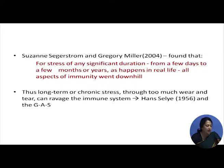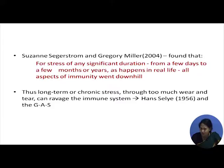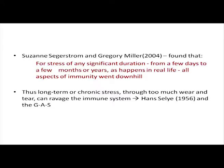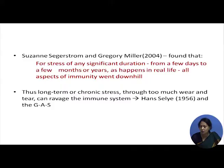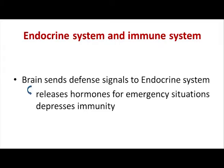Segerstrom and Miller in 2004 found that stress of any significant duration — from a few days to months or years as happens in real life — affects all aspects of immunity and immunity goes downhill. This brings us to Hans Selye and his General Adaptation Syndrome. After the period of resistance, when the phase of exhaustion comes in due to long-term or chronic stress, there is too much wear and tear and this can ravage the immune system.